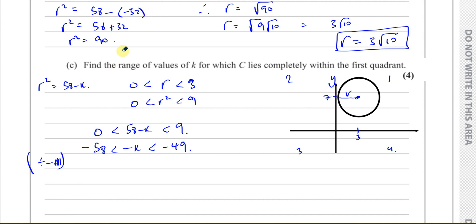When I divide by -1, this becomes 58, this becomes greater than, this becomes k, and this becomes greater than, this becomes 49. To make my answer look more sensible, we normally write the lower number first, so k must be between 49 and 58.